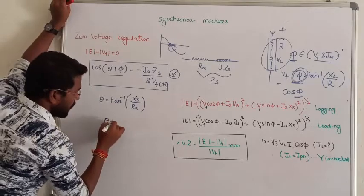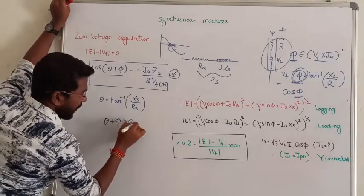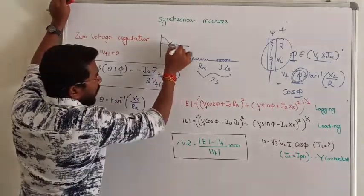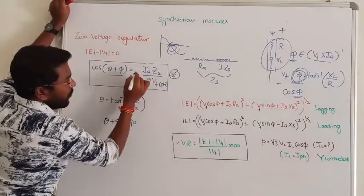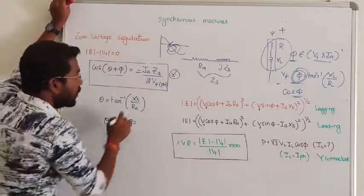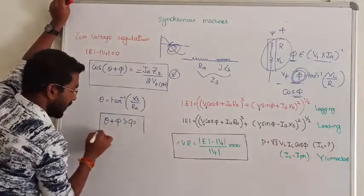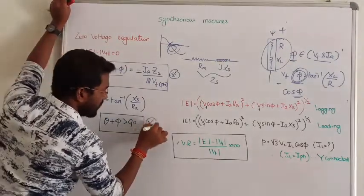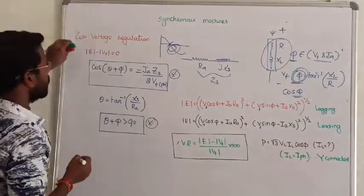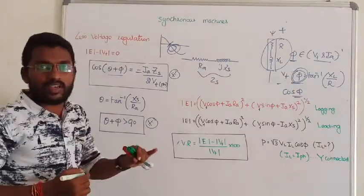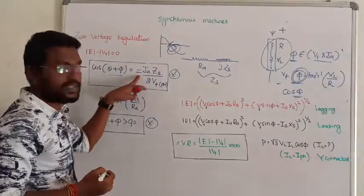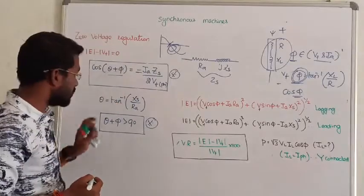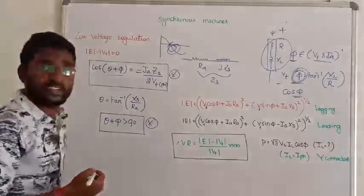So let me write: θ + φ value must be 90° or greater. When the value is 90° or greater, the cosine value is negative. So the mandatory condition is θ + φ must be greater than 90 degrees. Don't forget, this is the mandatory condition to bring zero voltage regulation. θ + φ greater than 90 degrees. This is all about zero voltage regulation.